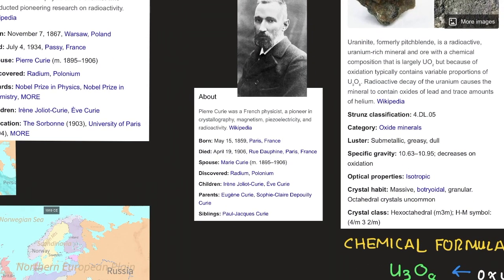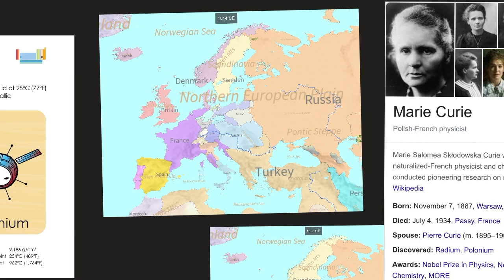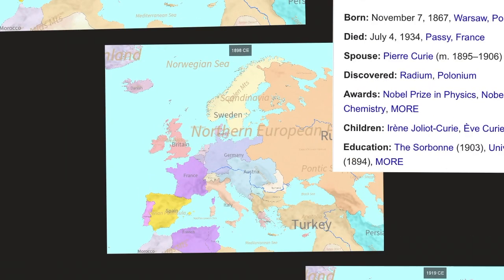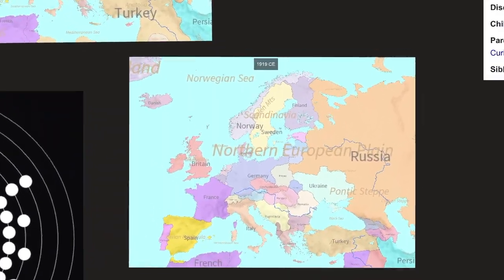Seen here, Pierre Curie was a French physicist, a pioneer in crystallography, magnetism, piezoelectricity, and radioactivity, according to Wikipedia. Here we have 1814 CE Europe. Here we have 1898 Europe. And here we have 1919 Europe.